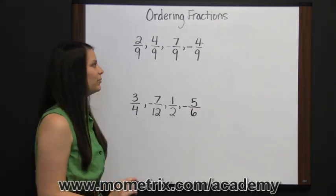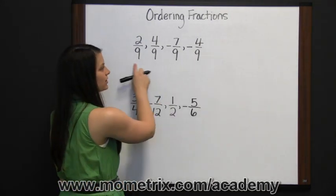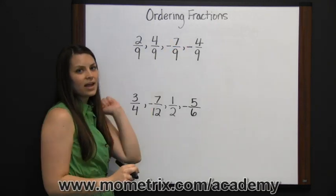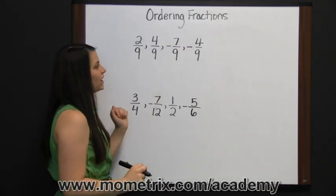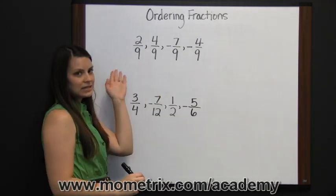Let's look at an example. You can see all the denominators are the same, so we're going to order these fractions by looking at our numerators. If we're ordering them from left to right, or from least to greatest.